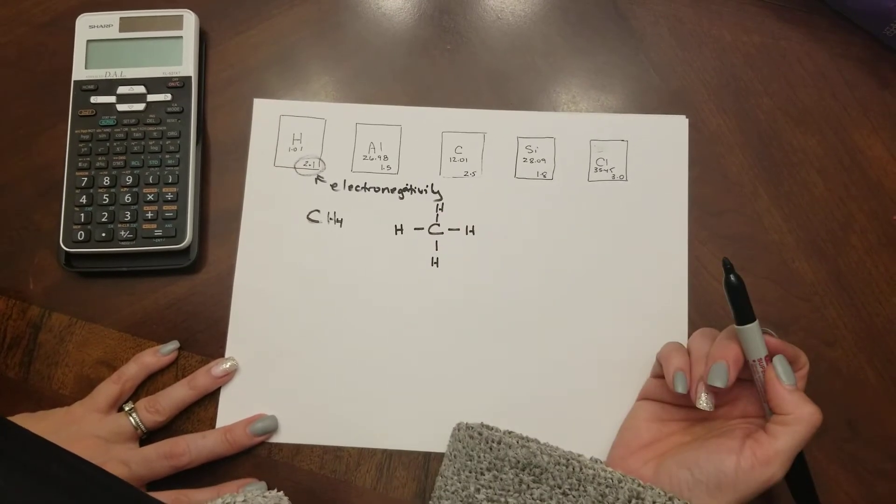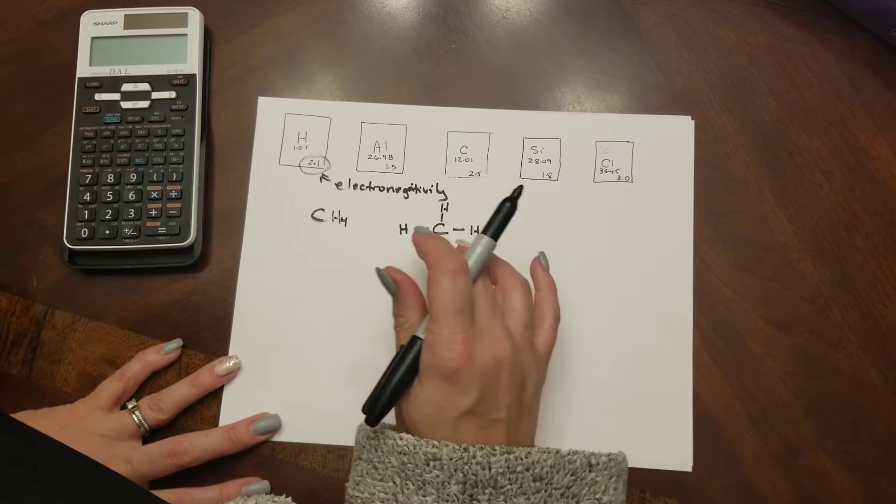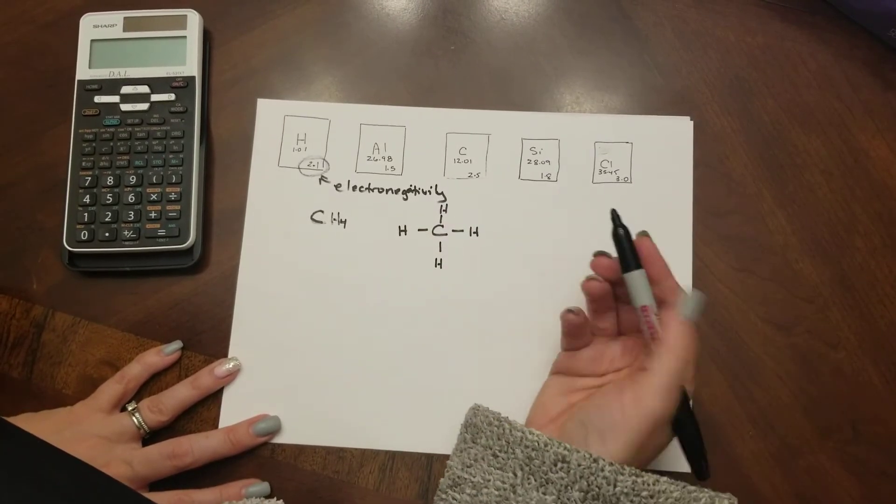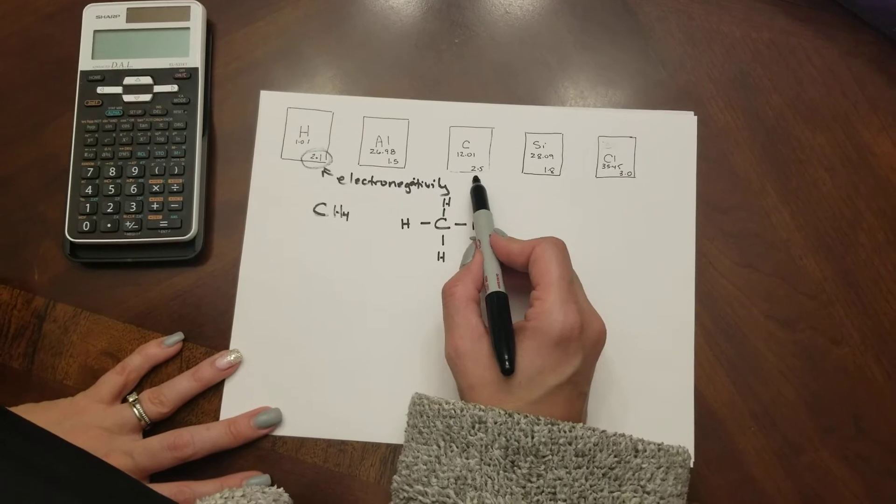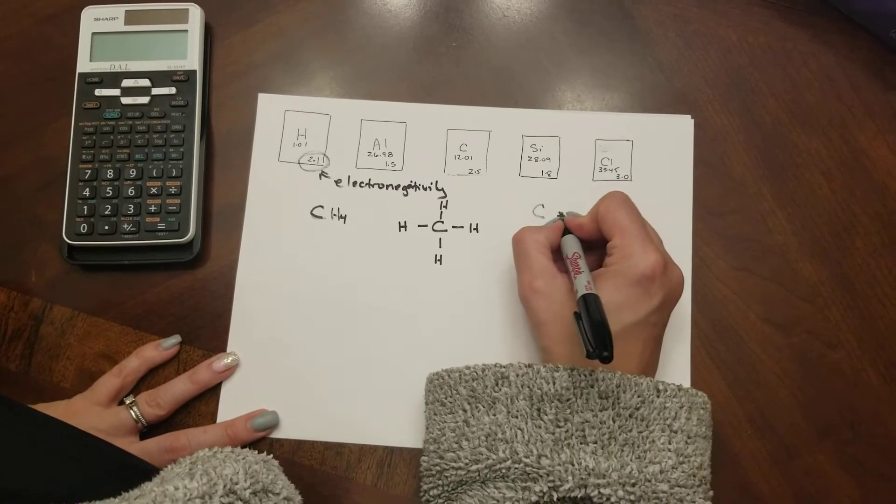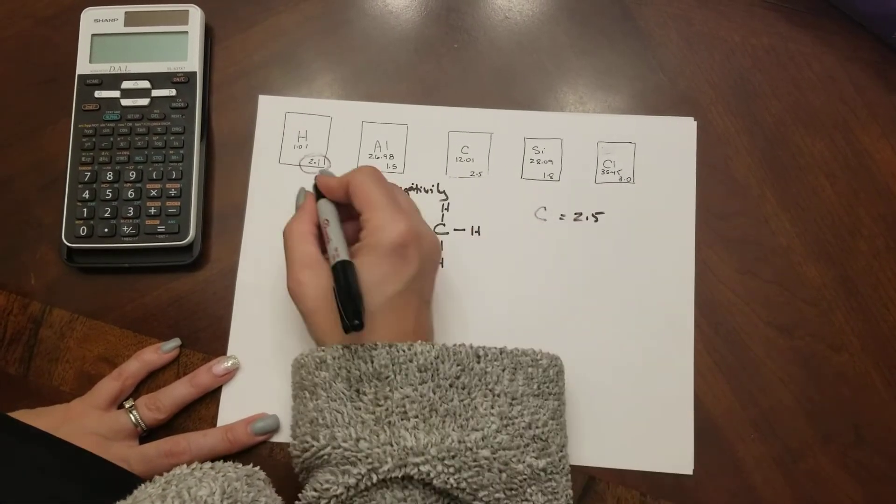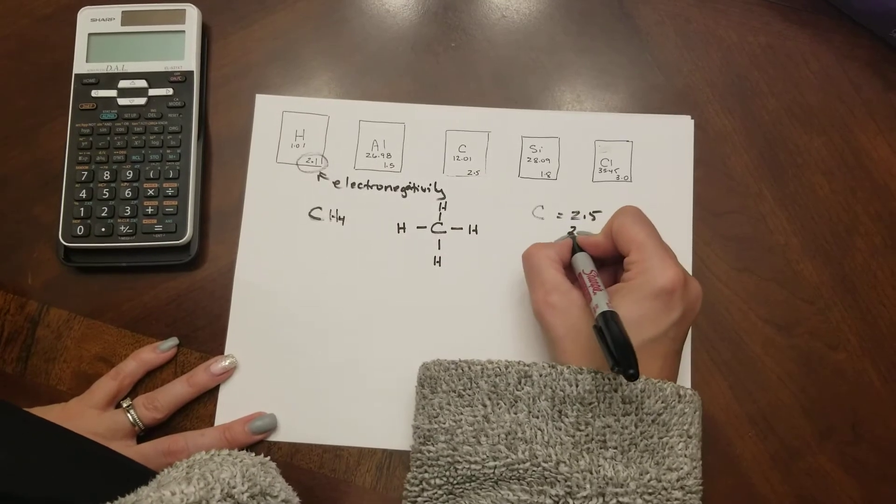So electronegativity talks about how strong the element is at pulling electrons towards itself. Carbon pulls electrons towards itself with 2.5. Hydrogen pulls electrons towards itself with 2.1.